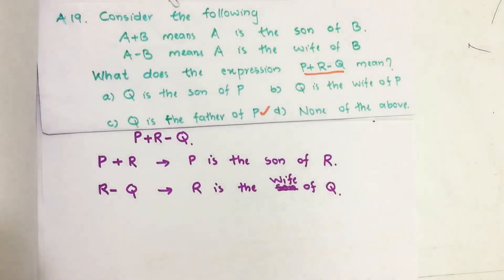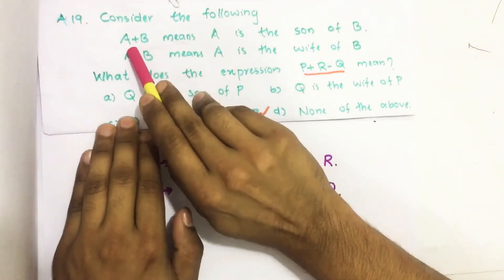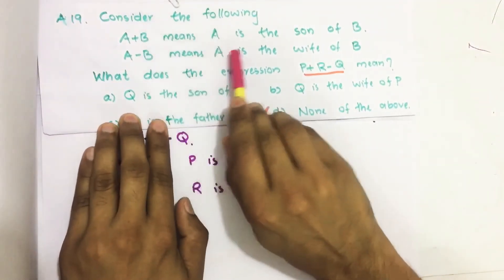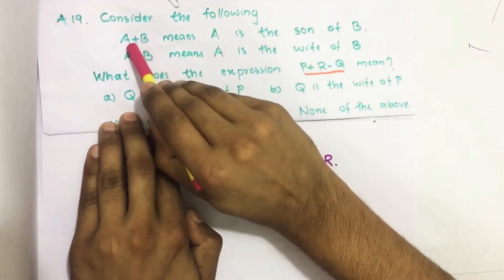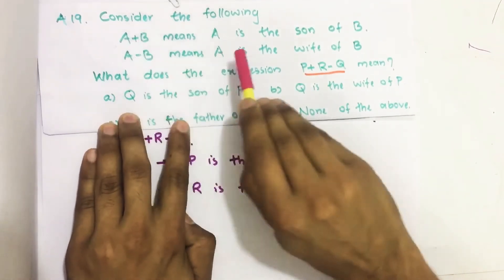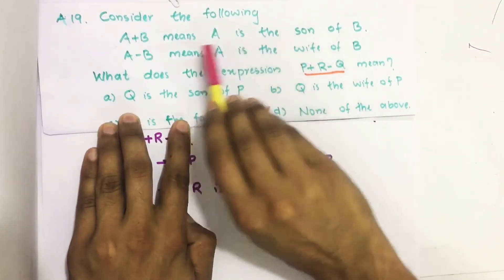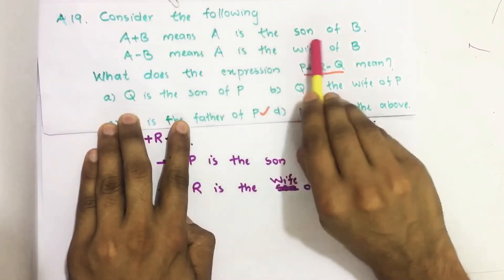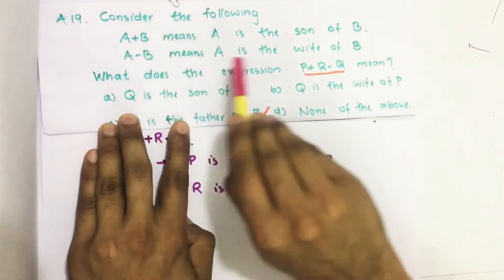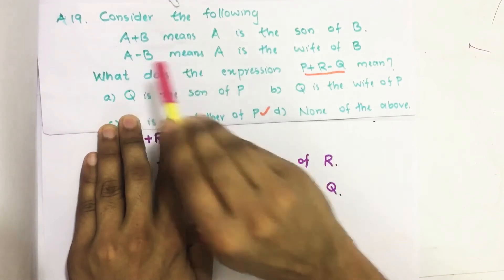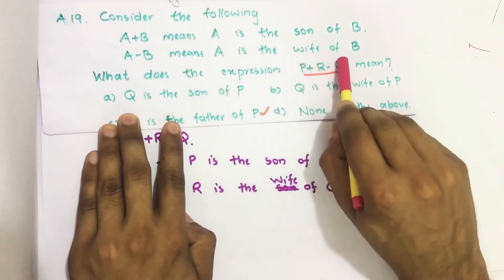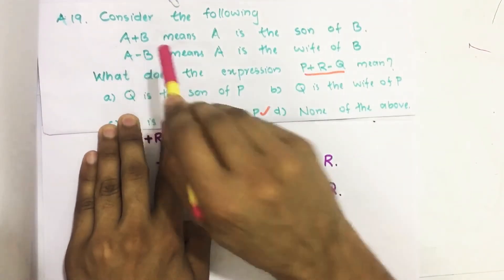We have four options here. It is given that A+B means A is the son of B. That means this plus sign indicates A is the son of B. Then this minus sign indicates A is the wife of B.